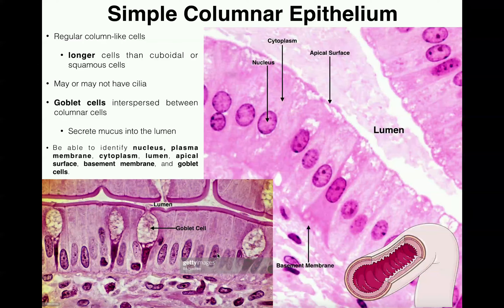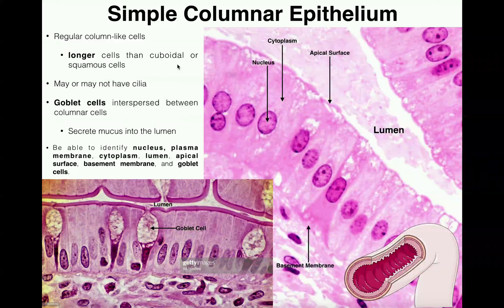In simple columnar epithelium, you'll also be able to see goblet cells. These are cells interspersed among the columnar cells that secrete mucus into the lumen, helping to lubricate the apical surface. One typical location for simple columnar epithelium is the lining of the small intestine. Some simple columnar cells also have cilia — whip-like projections on the apical surface — but this is not a defining characteristic of simple columnar epithelium.